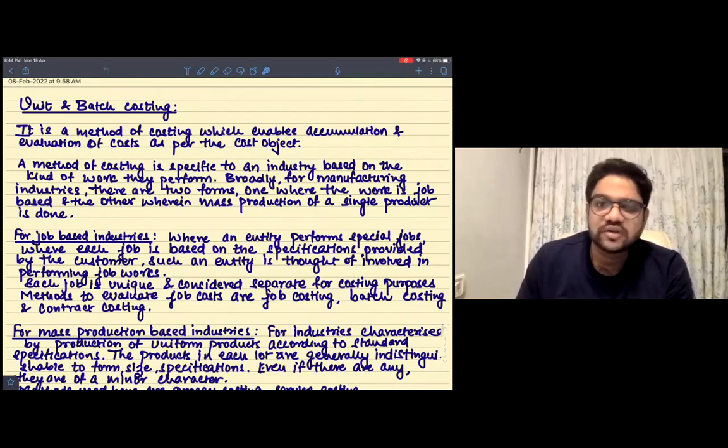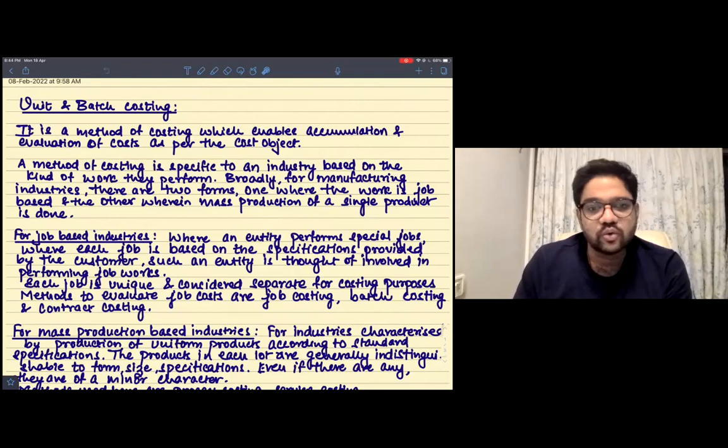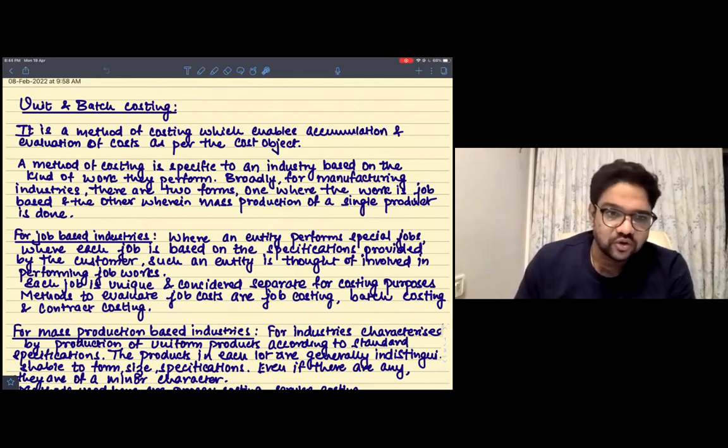So for manufacturing industry, there are usually two ways the work is performed. One where it is a mass production schedule where the products are made—a single product that's made multiple times. And the other is where the work is done job-based.